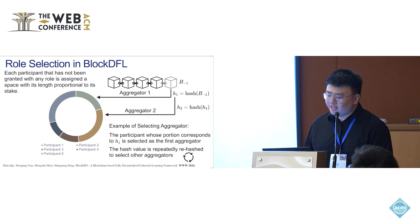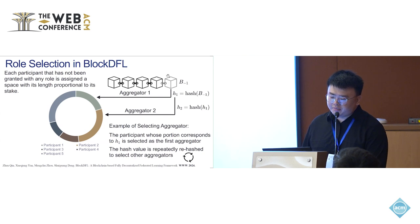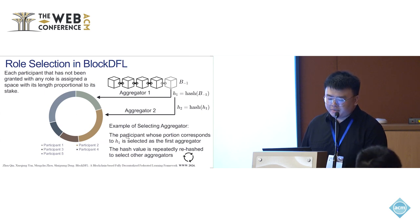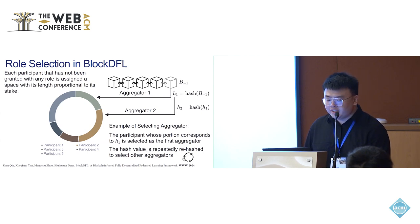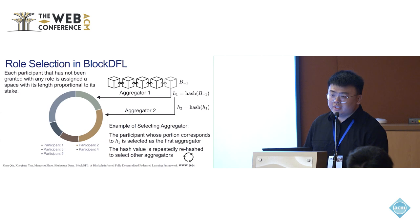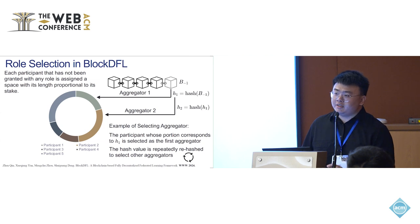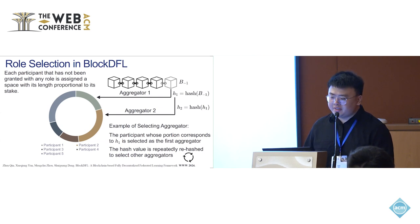In role selection, each participant that has not been granted any role is assigned a space with its length proportional to its stake. We take the last block and get its hash value, h1, and map it to the hash ring. The participant whose portion corresponds to h1 is selected as the first aggregator. The hash value is repeatedly rehashed to select other aggregators. After the aggregators have been selected, the same operation selects a certain number of verifiers. Participants not granted any role become the update providers.